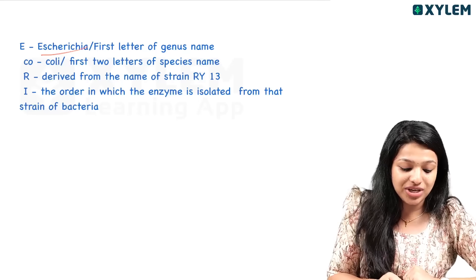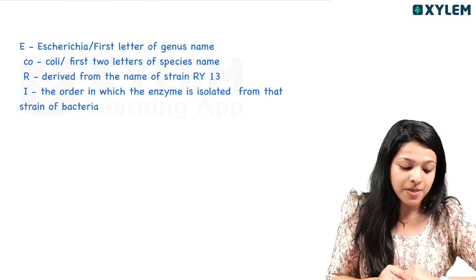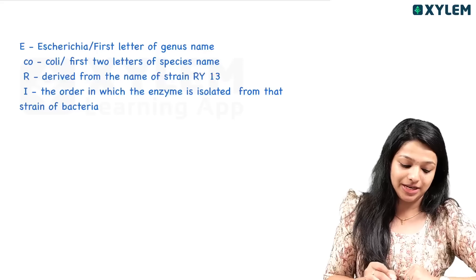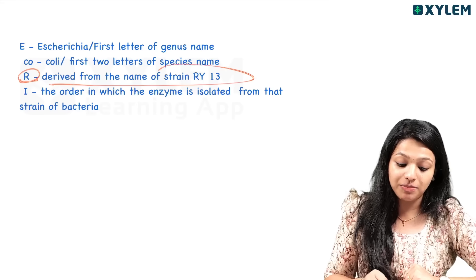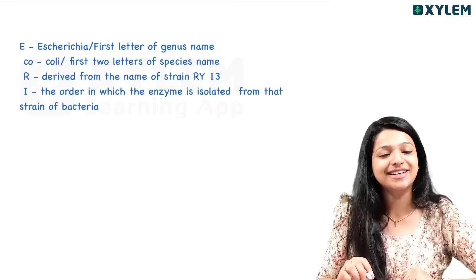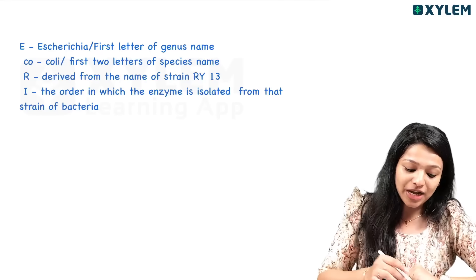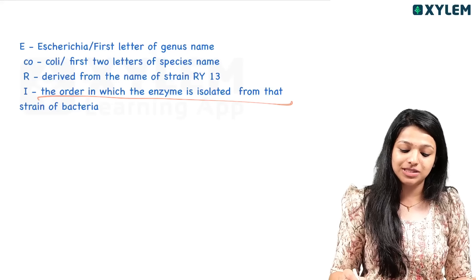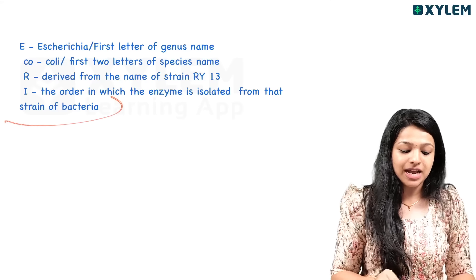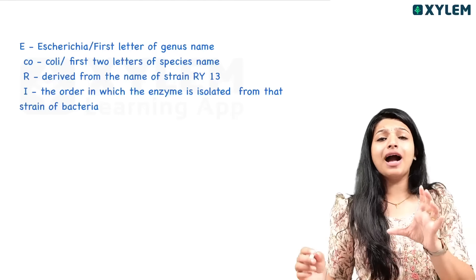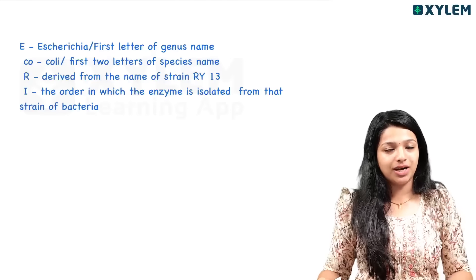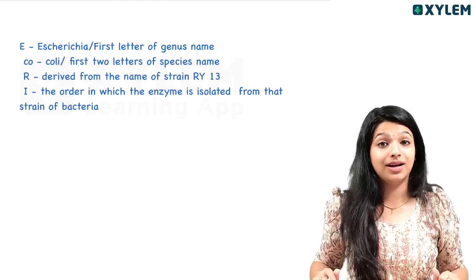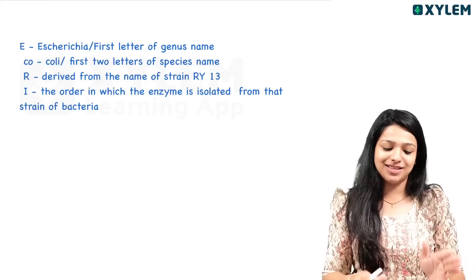The 'E' represents the first letter of the genus. 'Co' is the species name. 'R' is derived from the name of strain RY13. The number 1 indicates the order in which the enzyme was isolated from that strain of bacteria.